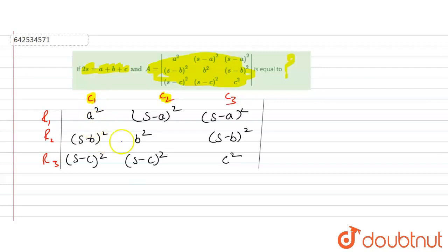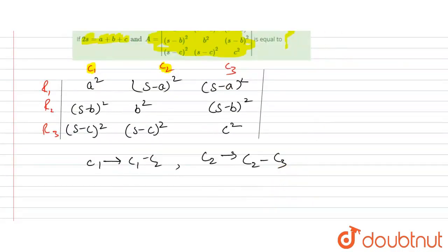See, in column one, we will subtract column one from column two, and in column two, we will subtract column two from column three. From that, we will get our answer. So if we subtract this column from this: a squared minus s minus a whole squared, right.